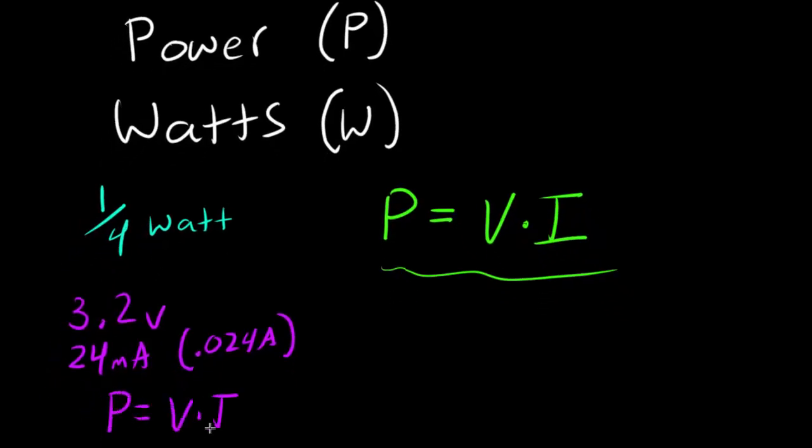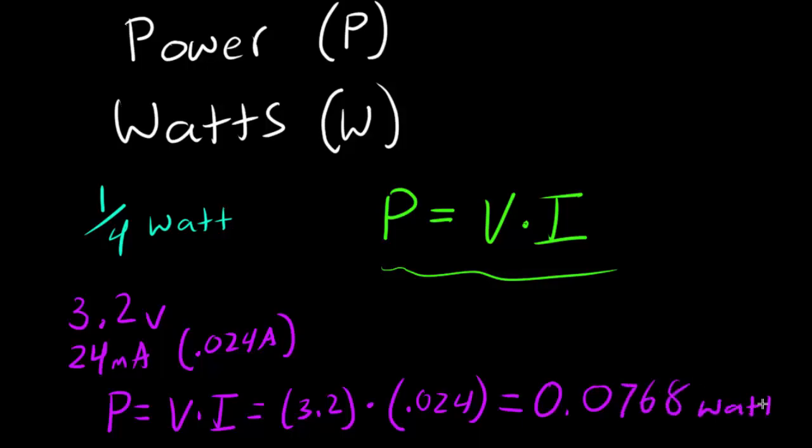And we know that power is going to equal our voltage times our current, which is going to equal 3.2 multiplied by our .024 amps, which is going to equal 0.0768 watts. So the power that my LED was using is .0768 watts. That is essentially the amount of energy that LED was using. And we could do the same or similar calculation for the resistor that we used in that circuit as well. Because remember, power is just a unit of work or how much energy is being used.